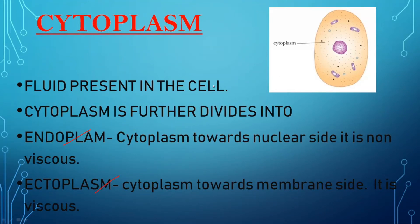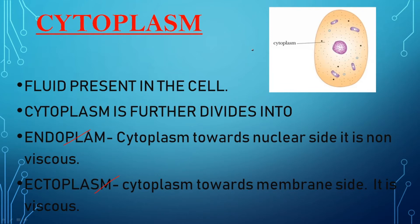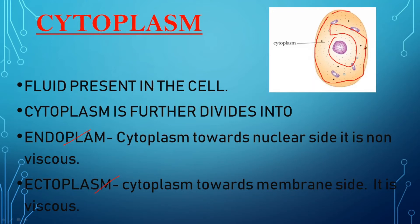Let us understand from the names. 'Endo' means towards the inside — so the cytoplasm found near the nucleus, in that portion, is called endoplasm. And the cytoplasm found near the plasma membrane, all around the plasma membrane, is called ectoplasm.